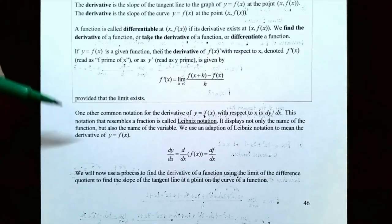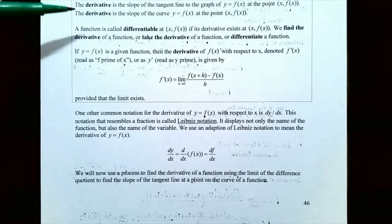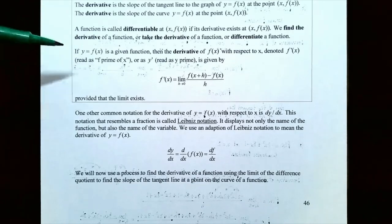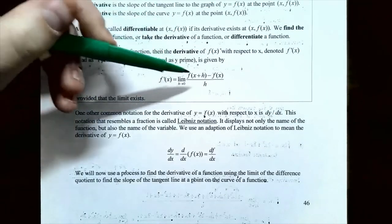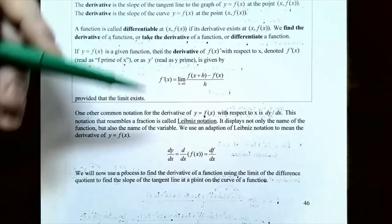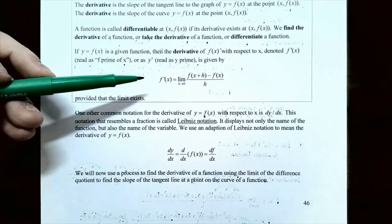This is a good place to stop our video now that we've talked about the definition of a derivative and the three equivalent problems: finding the slope of a curve at a point, finding the slope of the tangent line at a point, and finding the instantaneous rate of change at an instant in time. We discussed the definition of the derivative using the limit of the difference quotient, and covered both prime notation and Leibniz notation. In the next video, we'll calculate the derivative for various functions using the definition.